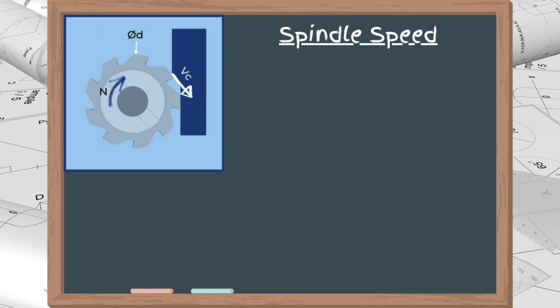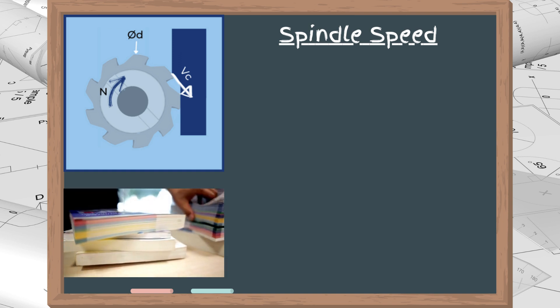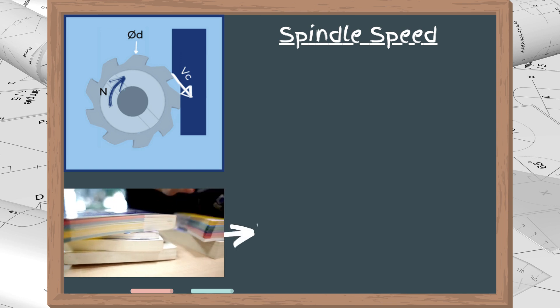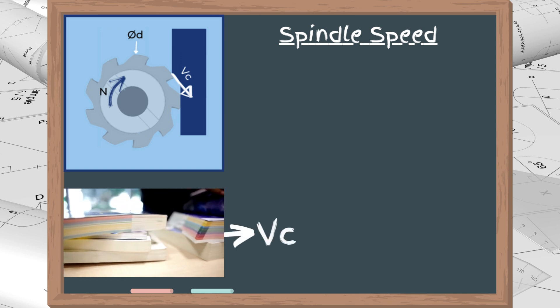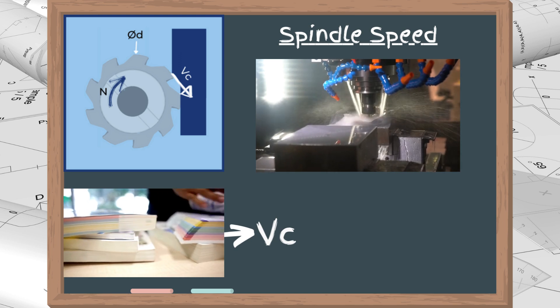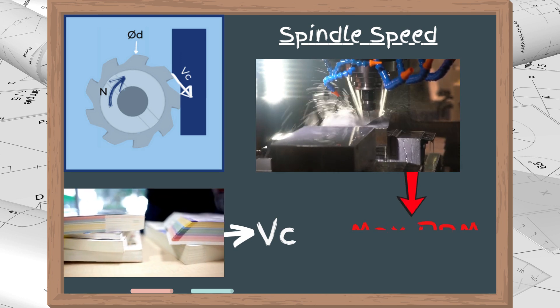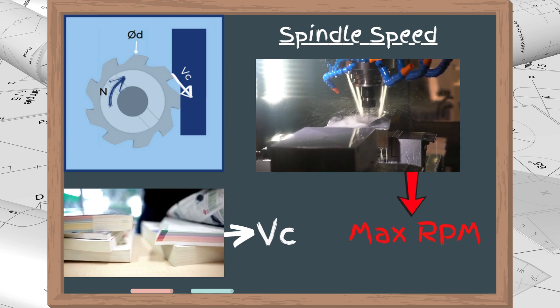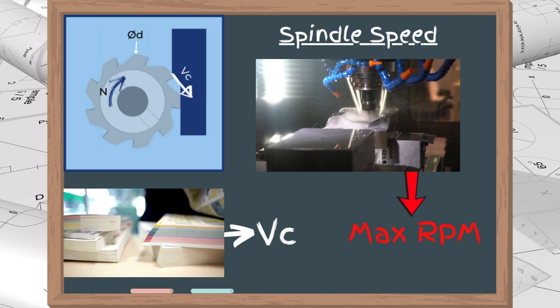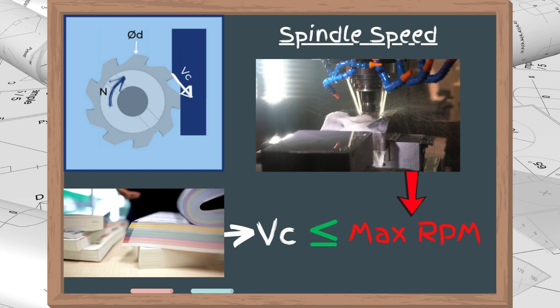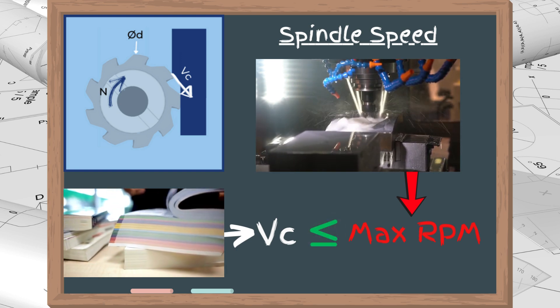Moving on to spindle speed calculation. The catalog, or our experience, tells us the cutting speed for a given application. On the other hand, the CNC machine is limited by its maximum spindle speed. Therefore, we commonly need to compute the spindle speed out of a given cutting speed to ensure that the speed we want to run at is within the machine's limit.